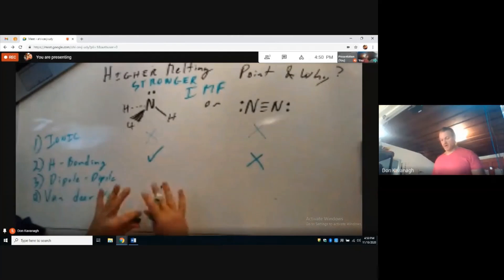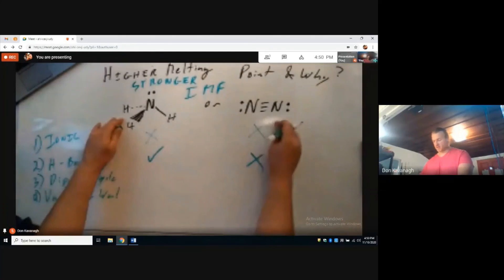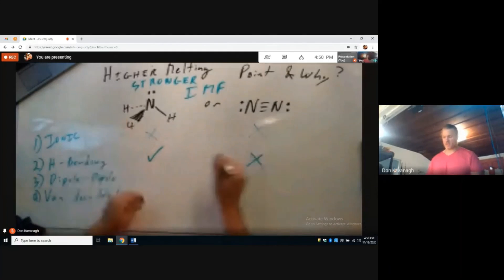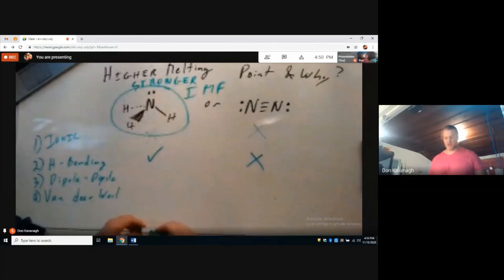With hydrogen bonding being present in ammonia but not present in dinitrogen gas, ammonia is going to have the stronger intermolecular force and therefore a higher predicted melting point. We don't have to go down the rest of the list because we took the list from strongest to weakest. Thank you.